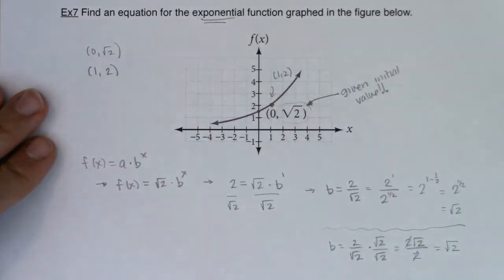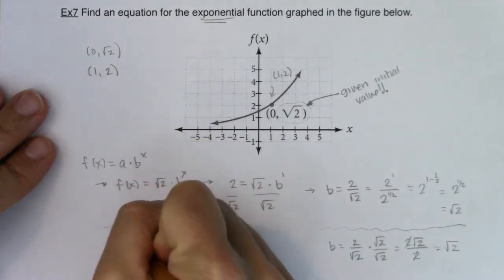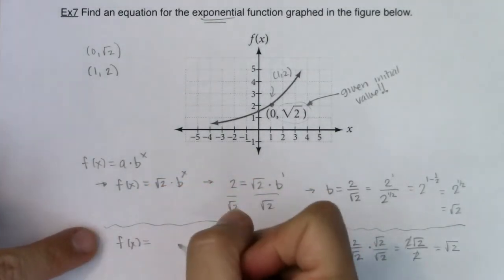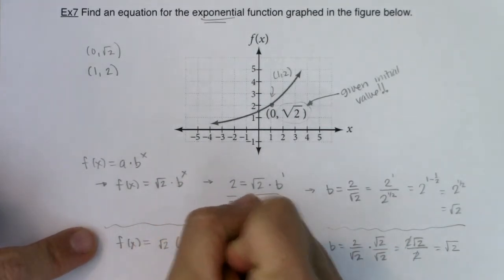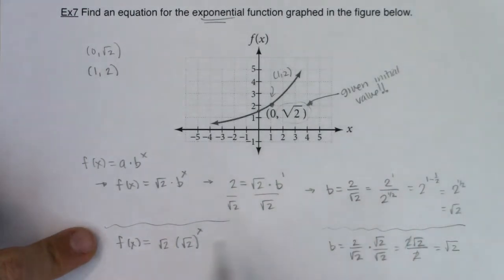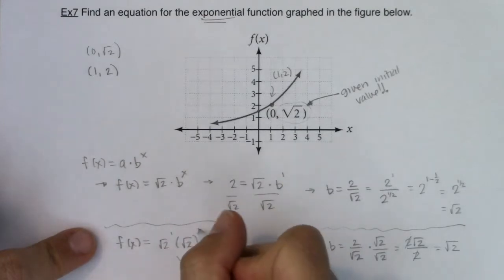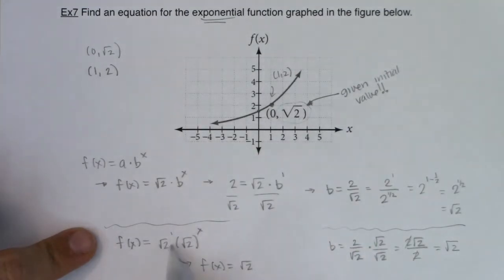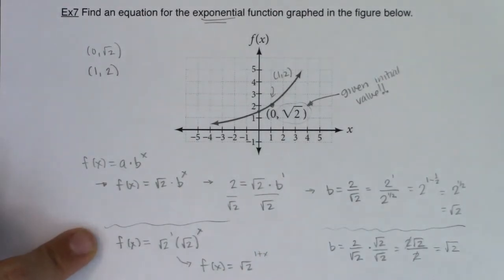So to answer the final part of this question, my exponential model will be f(x) - my a value was √2 and my b value was also √2. So I have √2 times √2 to the x. And if you want to take it further, this is √2 to the first times √2 to the x. So I could actually say this is √2 - when you have a power times a power, you can add the exponents. So this is √2 to the 1 plus x.